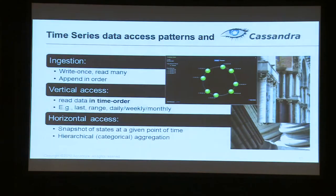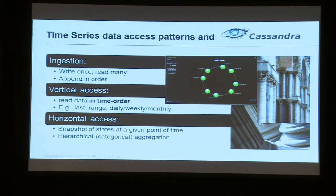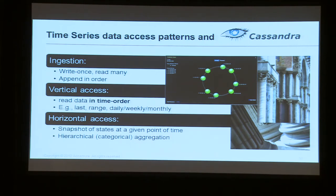So why is Cassandra good at this? The classic pattern of time series data is write once and read many times, typically appended in order. You don't really care that your data structure is essentially immutable and you're appending to the end of it — in fact, that's perfectly suited to this kind of data, playing to the strengths of the architecture. You tend to read data in time order, and that's how it gets organized within Cassandra, supporting that vertical access pattern very well. For horizontal access, you've got distributed searching benefits that make retrieval of states very efficient.